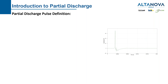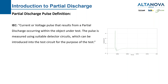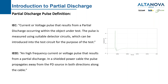Now let's define the partial discharge pulse. According to the IEC standard, a partial discharge pulse is a current or voltage pulse that results from a partial discharge occurring within the object under test. The pulse is measured using a detectable detector circuit. According to IEEE, in a shielded power cable, the pulse propagates away from the discharge site in both directions along the cable. In short, a partial discharge pulse is a high frequency electrical pulse.